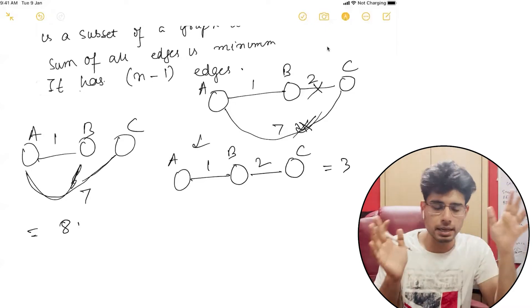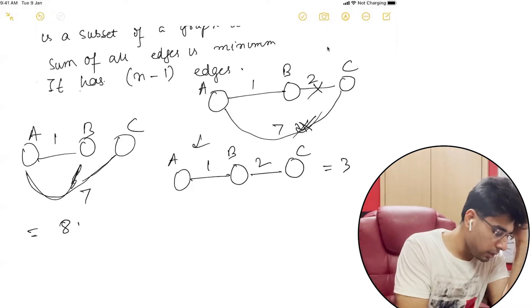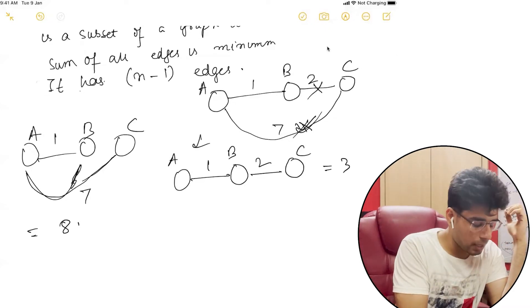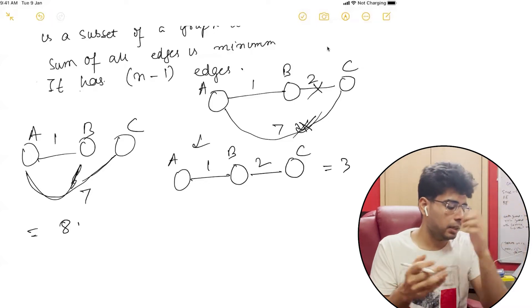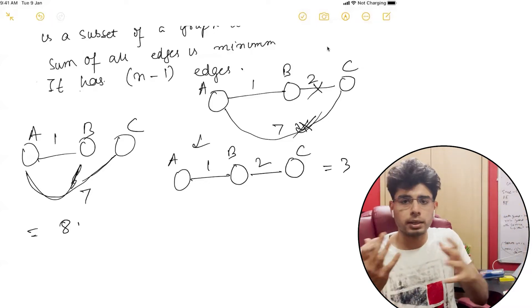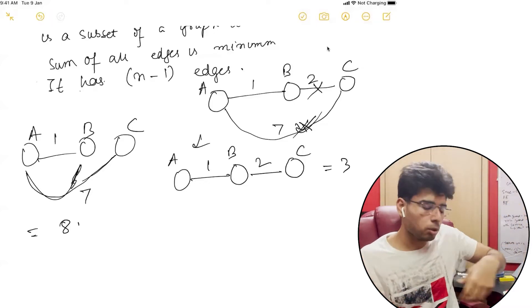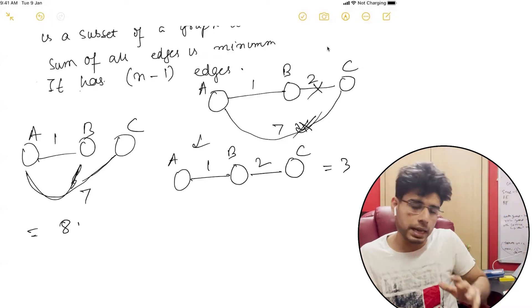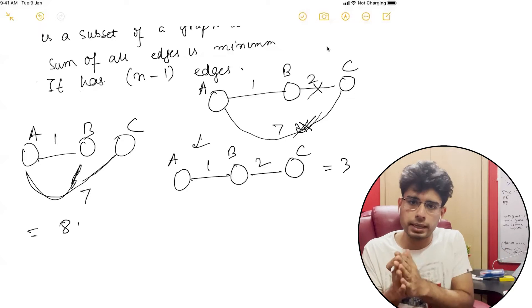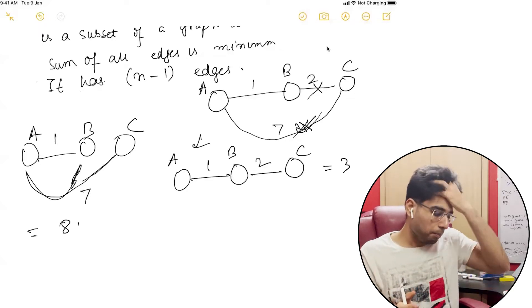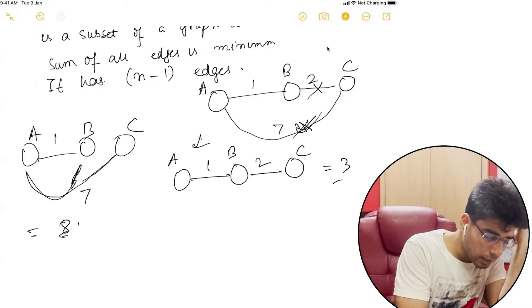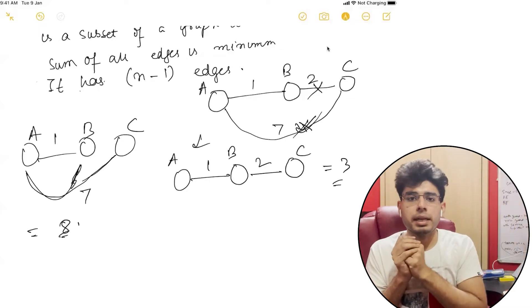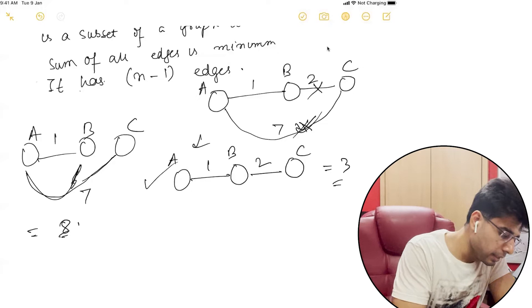The graph is still connected — A is connected to B, A is connected to C, and B is also connected to C via A. But the cost is 8, whereas here the cost is 3, so we'd take the option with cost 3.